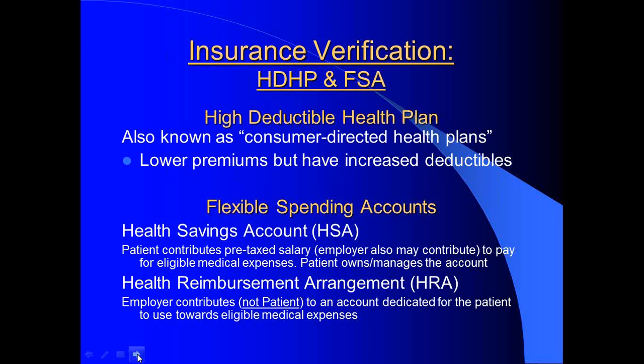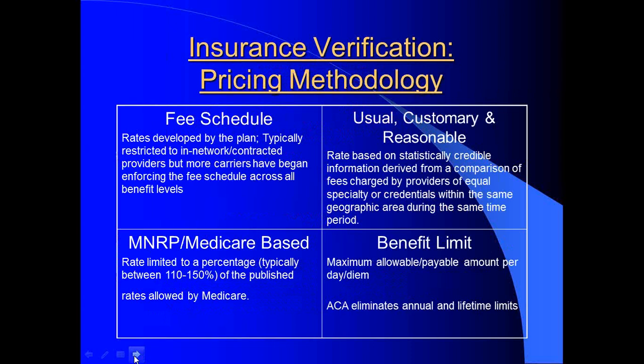To help manage the increasing deductibles, patients may have the option of a flexible spending account. A health savings account, or HSA, is a patient contribution account — they can apply their pre-tax salary to pay for eligible medical expenses. This account is owned and managed by the patient and is transferable; if they lose or change jobs, it goes with them. A health reimbursement arrangement, or HRA, is an employer contribution dedicated to the patient for eligible medical expenses, but it does not transfer with them. The carriers will rarely have the balances to these, but your patients will.